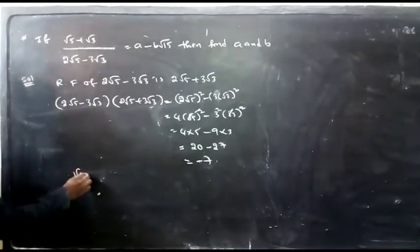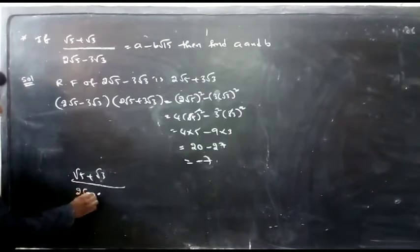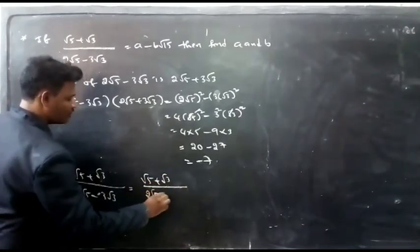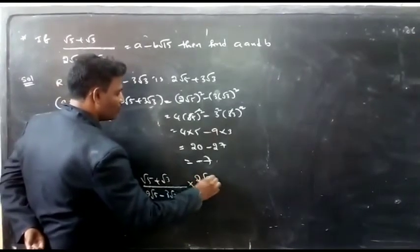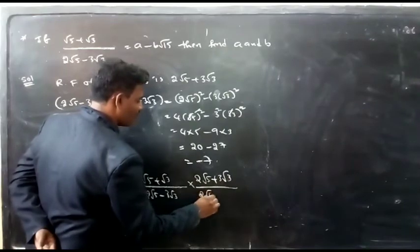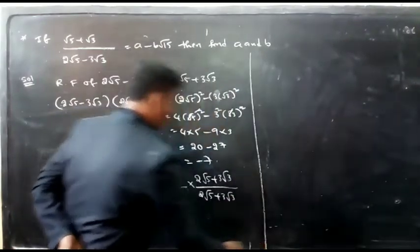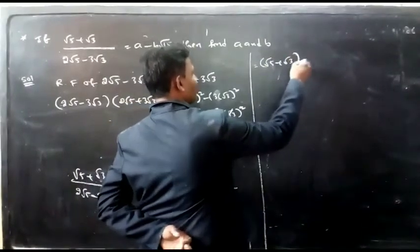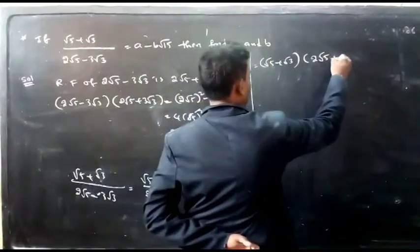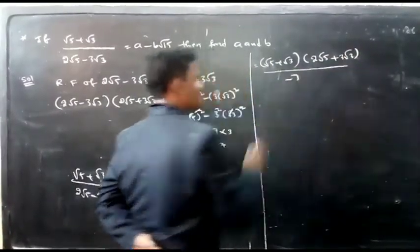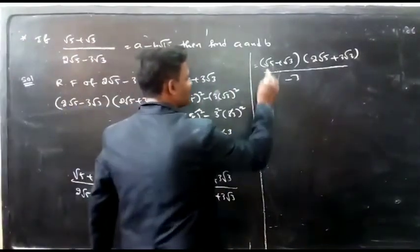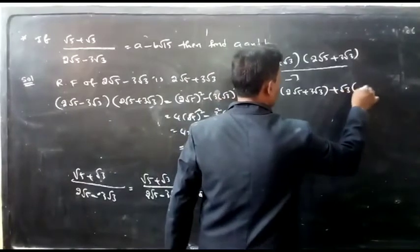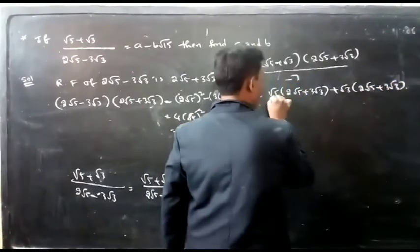So (√5 + √3) / (2√5 − 3√3) = (√5 + √3)(2√5 + 3√3) / [(2√5 − 3√3)(2√5 + 3√3)]. Multiply the numerators: (√5 + √3)(2√5 + 3√3). The denominator is −7.